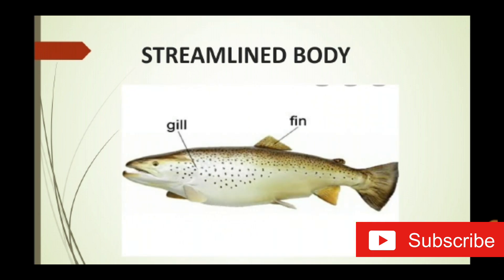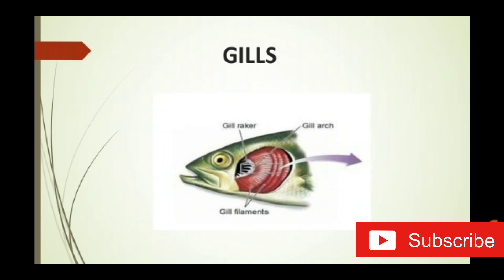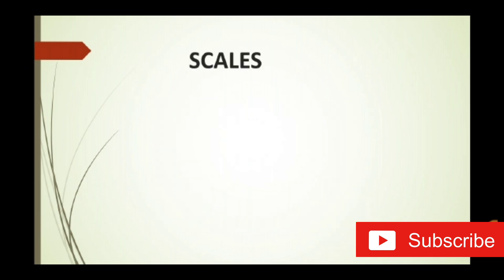First, streamlined body — the fish has a streamlined shape body, that means the sharp shape of the body is known as streamlined body. Second, gills — the fish has a special organ called gills, that is the respiratory organ of fish which helps for breathing. For human beings, the respiratory organ is lungs. Likewise, for fish the respiratory organ is gills, and it helps in breathing — to intake oxygen and exhale carbon dioxide.